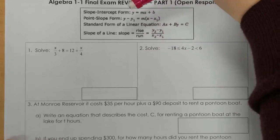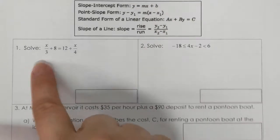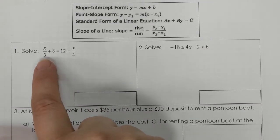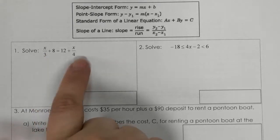So if we look at number 1, we have variables on both sides and we have a fraction, so we need to clear the fraction. To get the common denominator, I take the 3 and the 4 and I multiply them together and I get 12.